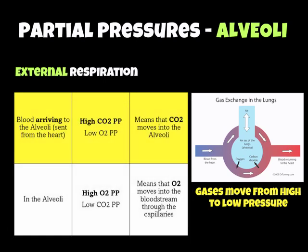Let's work through this. Blood arriving to the alveoli sent from the heart — that's the blue blood coming in — is high in carbon dioxide partial pressure. So it's full of carbon dioxide, and at the same time it is very low in oxygen partial pressure. When that blue bloodstream meets the alveoli, because gases move from high to low pressure, the carbon dioxide will move into the alveoli and out through your trachea and mouth into the atmosphere.